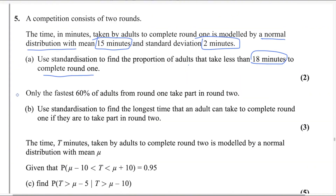In the next part, only the fastest 60% of adults from round one take part in round two. So 60% of the adults qualify for round two — that probability is 0.60. We need to use standardization to find the longest time adults can take to complete round one and still qualify for round two. Since the mean is 15 minutes and 50% of data is on each side, that time will be more than 15 minutes.